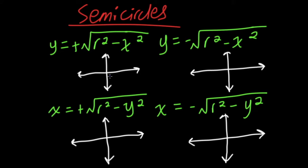So, here we have the four different equations for a semi-circle. They're all very similar, but have a few differences which determine how the semi-circle looks. In all these examples, you will have r, which is the radius.